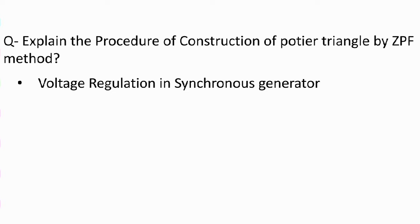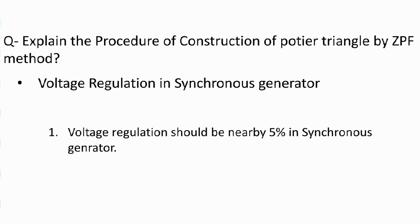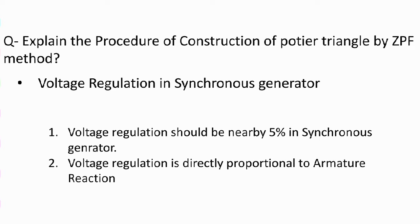Voltage regulation should be around 3 to 5% in a synchronous generator. The reason behind this is stability — there is a stability reason. We want voltage regulation around 5%, as we saw in the previous video where we discussed why the size of the alternator should be increased, short circuit and open circuit characteristics, and that stability is the major concern in a synchronous generator.